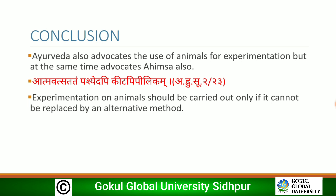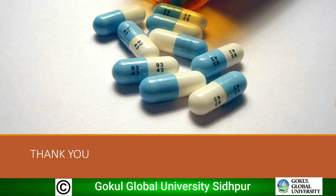In conclusion, Ayurveda also advocates the use of animals for experimentation, but simultaneously advocates reverence for all life. A reference in Ashtanga Hridaya Sutrasthana, second chapter, quotes Acharya: 'Atmavat sarvabhuteshu pashyed api kira pilikam' — meaning experimentation on animals should be carried out only when there is no alternative method. Thank you.